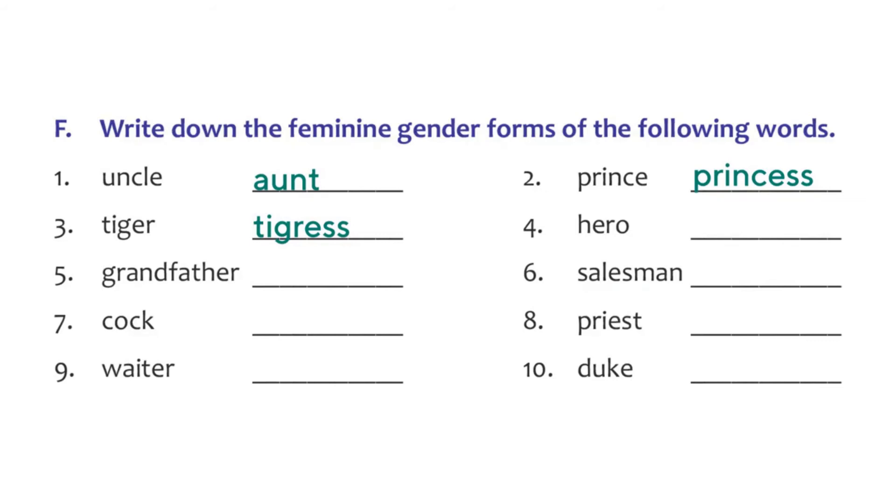Fourth one: hero. You add I-N to it and you get the feminine gender, heroine. Five: grandfather. What is the feminine gender? Grandmother. Six: salesman. The feminine gender is saleswoman. Cock: hen. Priest: priestess. Waiter: waitress. Duke: duchess.